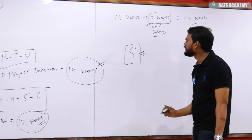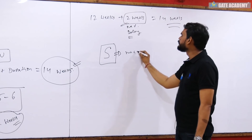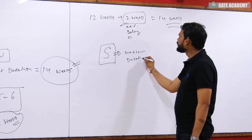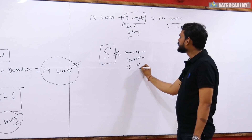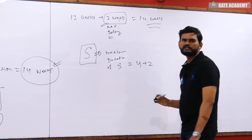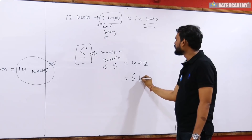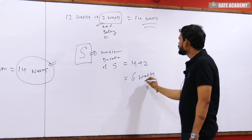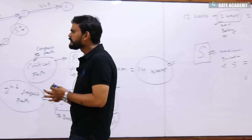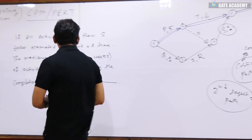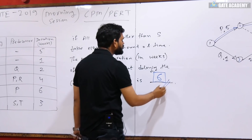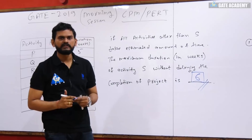So the maximum delay possible is two weeks, and this is only for activity S. If you delay S by two weeks — the actual estimated duration of S was four weeks, and maximum delay is two weeks — so four plus two equals six. Therefore the maximum duration of S is six weeks, which is the right answer.